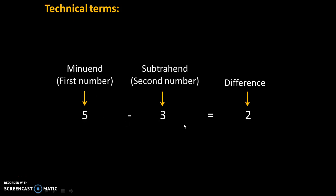5 minus 3 is equal to 2. Here, 5 is the first number which is also called as the minuend. 3 is the second number which is also called as the subtrahend. And 2 is the answer which is also called as the difference.